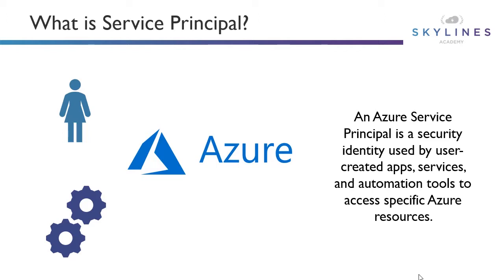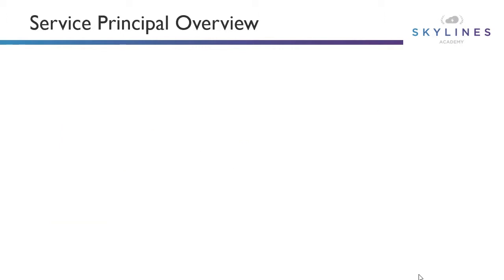The key is only giving service principles the permissions they need in order to do the work you want them to do. Obviously, Terraform is going to need some fairly good permissions. In fact, we'll use the contributor role here for the subscription because it's going to touch a whole number of things. But if we didn't want people to be allowed to create certain types of resources, we could use a custom role and assign it to the application identity we create in Azure.